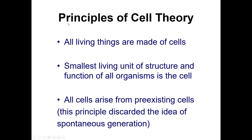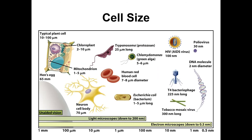Cell theory is the general set of ideas that embody what we think cells are. The first part is that all living things are made of cells. The second part is that the smallest living unit of structure and function of all organisms is the cell. Third, all cells arise from pre-existing cells — this principle discarded the idea that cells generate spontaneously out of nowhere.